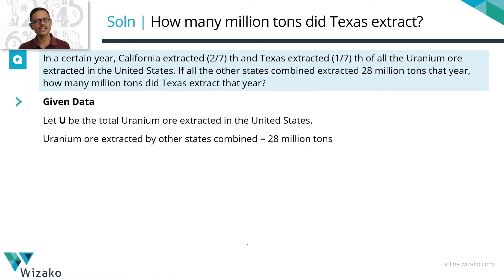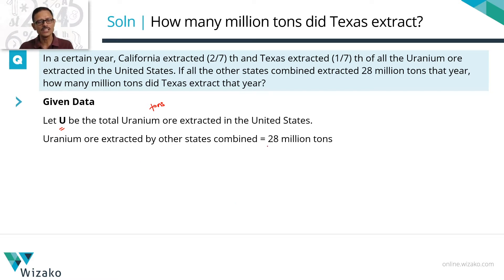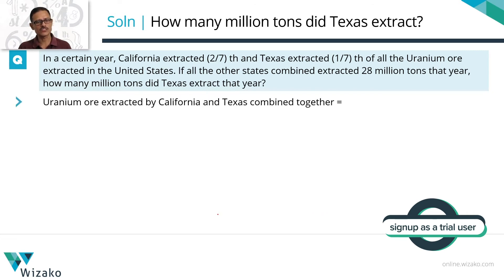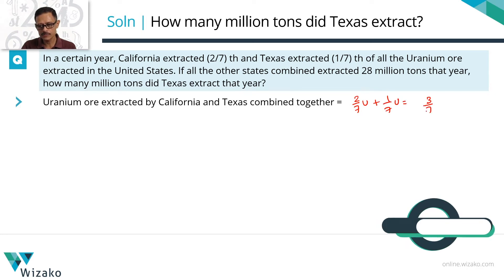Key data given to us — I'm going to start by assigning a variable. Let U be the total quantum in terms of number of tons of uranium ore extracted in the United States in that year. All the other states other than Texas and California together extracted 28 million tons. California extracted two sevenths, so it's two sevenths of U, and Texas extracted one seventh, that's one seventh of U. So California plus Texas together would have extracted two sevenths U plus one seventh U, which is equal to three sevenths U.